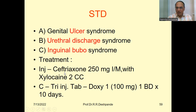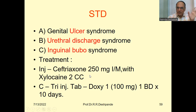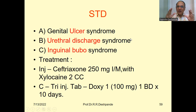Injection ceftriaxone (brand name: Injection C-Tri) 250 mg intramuscular with xylocaine 2 cc — xylocaine without adrenalin. This is given only once. In addition, tablet doxycycline (Doxy-1) 100 mg — one tablet morning and one evening for 10 days after the injection. Ceftriaxone is the generic name; C-Tri is the brand name. The treatment approach for sexually transmitted diseases nowadays is straightforward: a single injection plus a course of doxycycline.